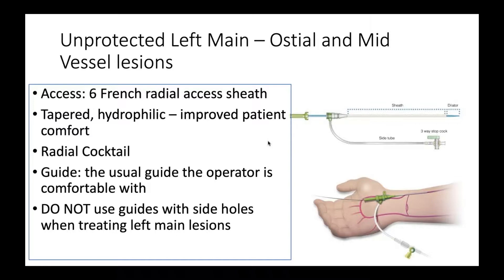For a standard osteo or mid-vessel lesion, the approach can be a 6 French right radial access. The sheath is usually a tapered hydrophilic sheath — the hydrophilic coating improves patient comfort. Do not forget the radial cocktail. Use the guide you are most comfortable with; this is not a time to experiment with new guides. Do not use guides with side holes, as they can give a false sense of security by masking pressure dampening, which can lead to significant adverse outcomes.